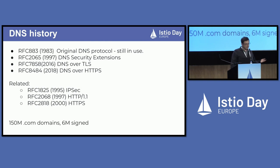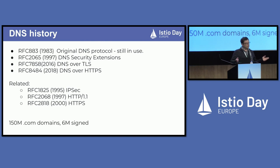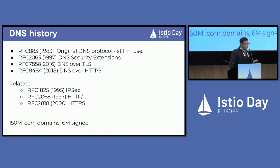Related standards: '95 IPSec, HTTP 1.1 also without security in '97, and finally HTTPS in 2000. As an idea, out of 150 million .com domains, about 6 million are currently signed. But that's actually very good because many of the .com domains are just vanity domains or squatting. So 6 million signed domains is actually a good number. And we'll see why signing domains and using those protocols is very important for Istio users and for all mesh users.